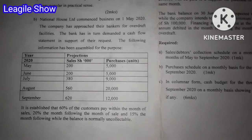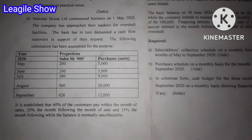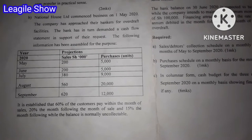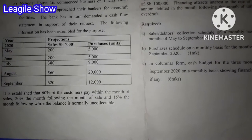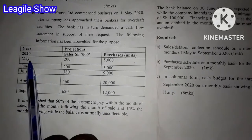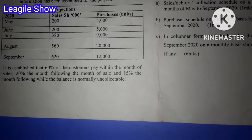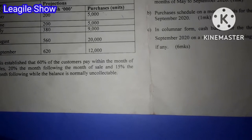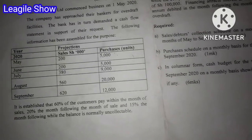But for today, we'll be checking on this calculation here. If you are new to this channel, just subscribe, like, share and comment on our videos. The question states that National House Limited commenced business on 1st May 2020. The company has approached their bankers for overdraft facilities. The bank has in turn demanded a cash flow statement in support of their request. The following information has been assembled for the purpose — the sales and purchases per month given in the year 2020. It is established that 60% of the customers pay within the month of sale, 20% the month following the month of sale, and 15% the month following, while the balance is normally uncollectable. That is the data we're going to use to calculate the first part of this question.